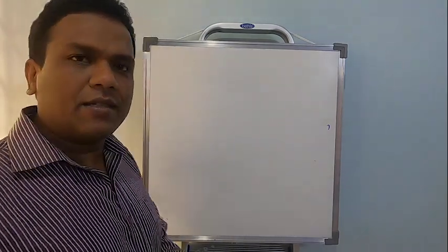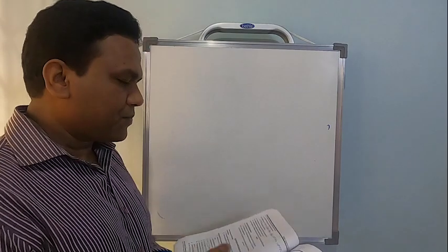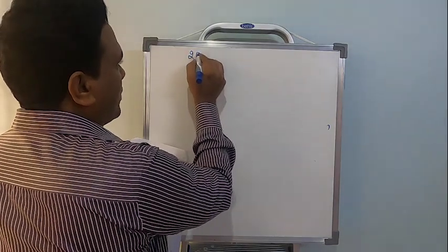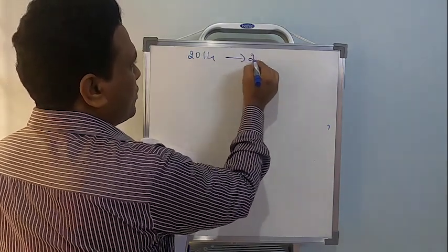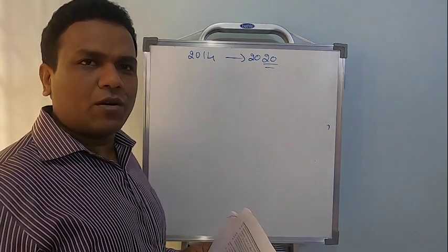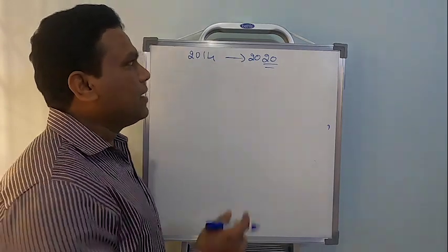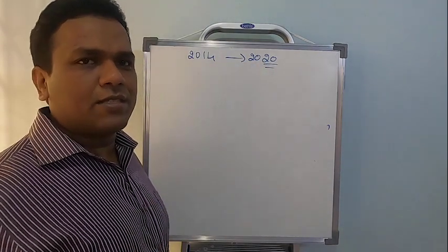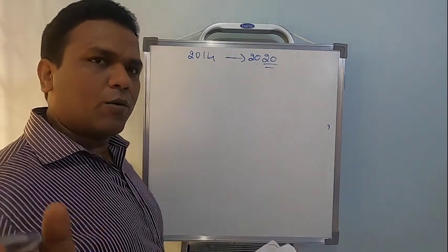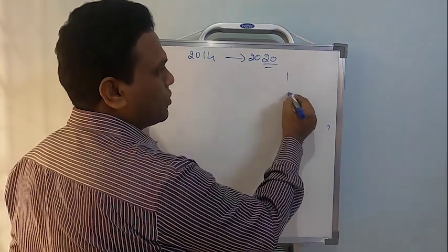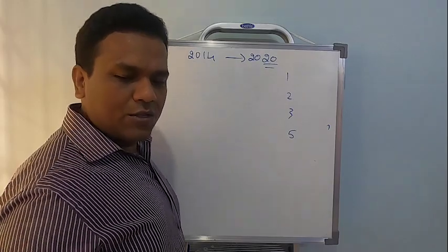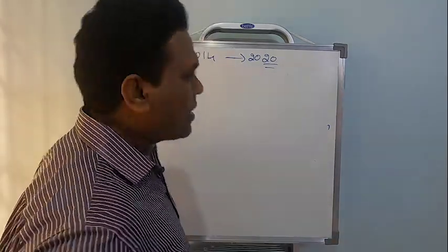I am going to start the discussion from 2014 onwards till 2020 — till the previous examination your seniors wrote. I will discuss everything from the differentiation chapter. Let us take the one mark column first, then two mark, three mark, and five mark columns for discussion.